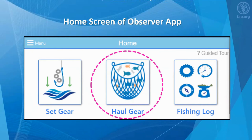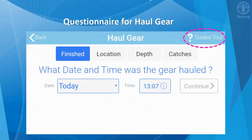When the fishing gear is hauled on board the vessel, the observer will simply select the haul gear button. Rather than a long form of many data entry fields, the application uses a questionnaire approach for recording haul information.